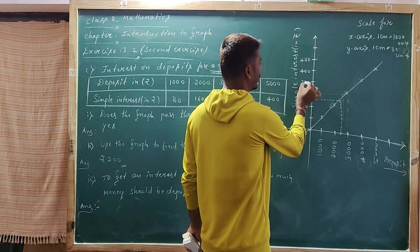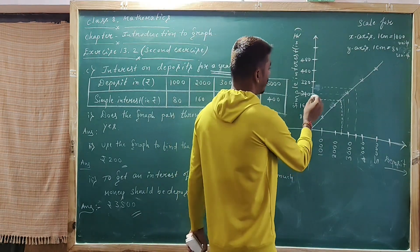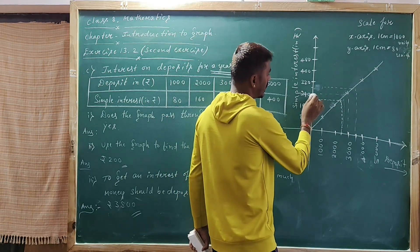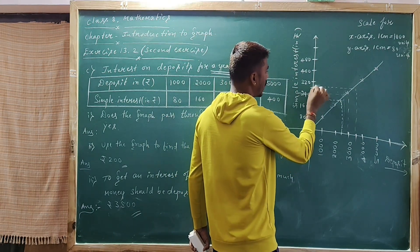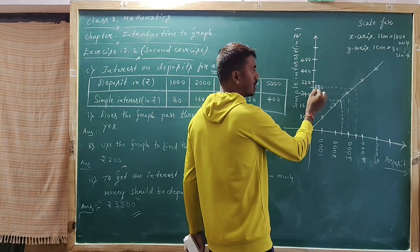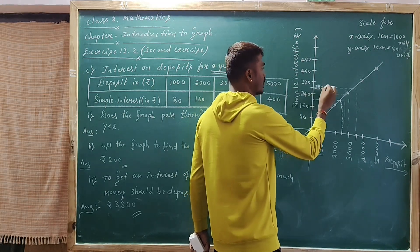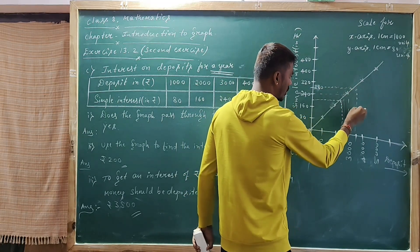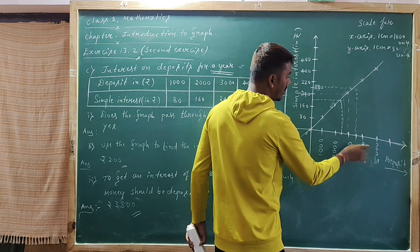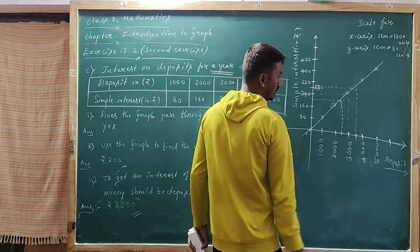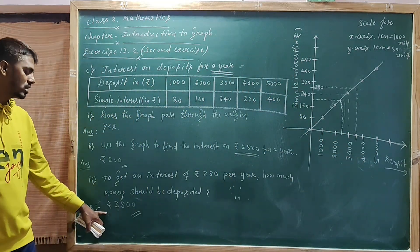The interest values 240 and 320 — the midpoint is 280. To get 280 rupees as interest, what is the deposit amount? It is exactly between 3000 and 4000, so the answer is 3500 rupees deposit.